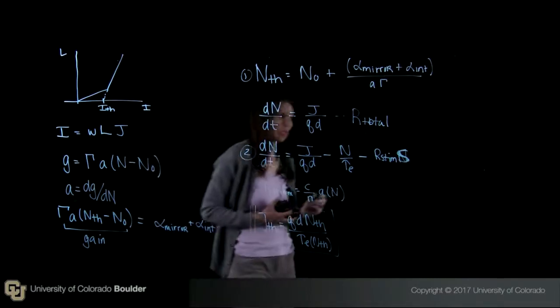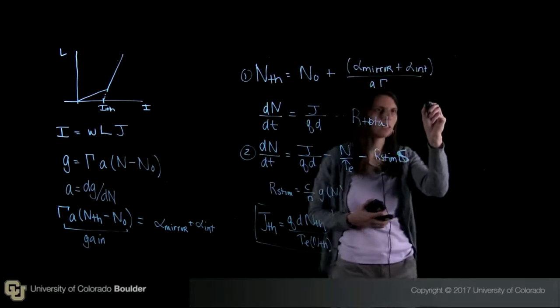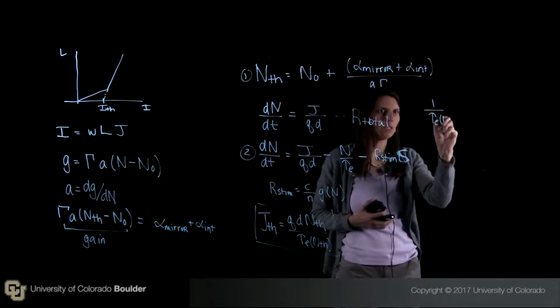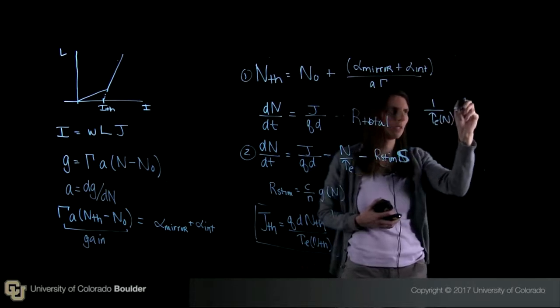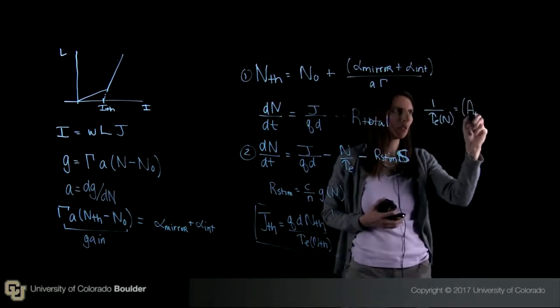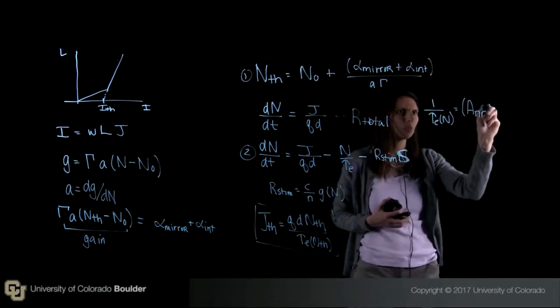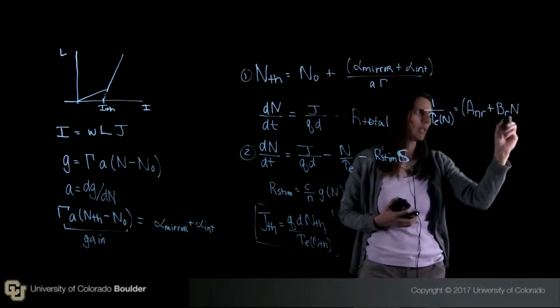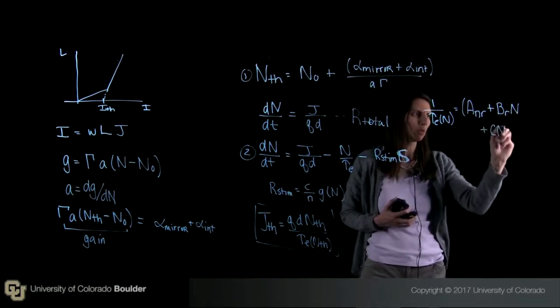We can also write down an expression for the carrier lifetime. One over tau e of n equals a, the non-radiative recombination, plus b, the radiative recombination times n, plus c times n squared, where c represents the Auger recombination.